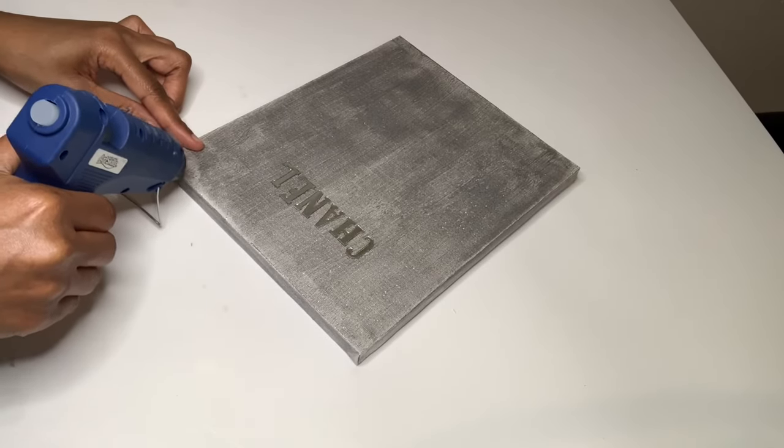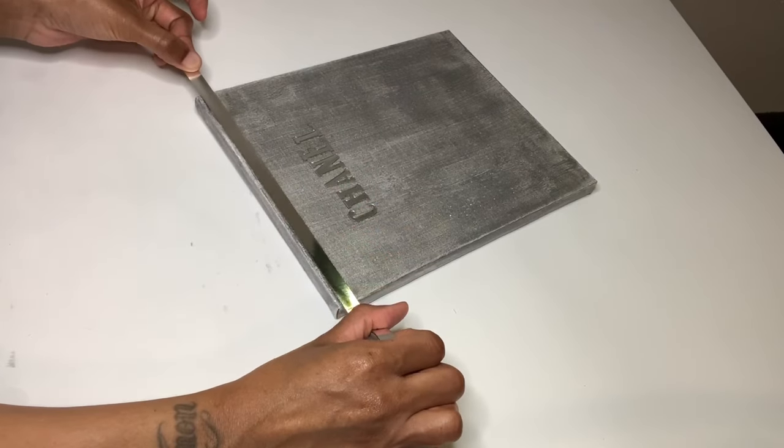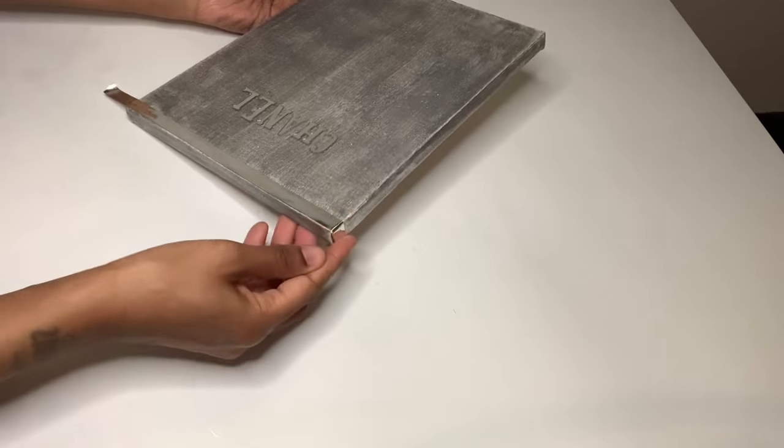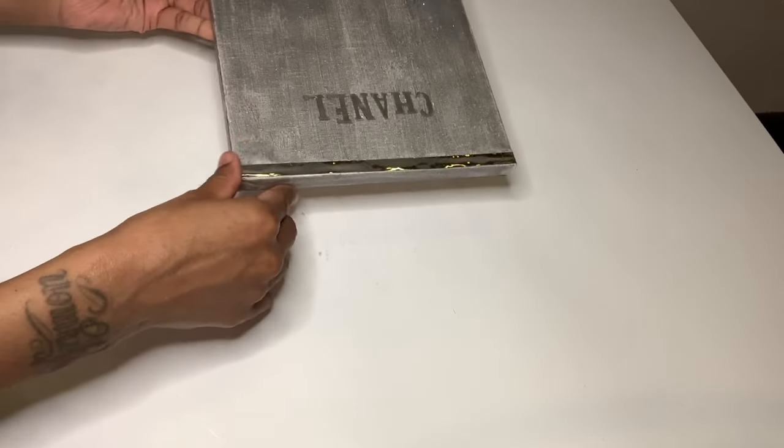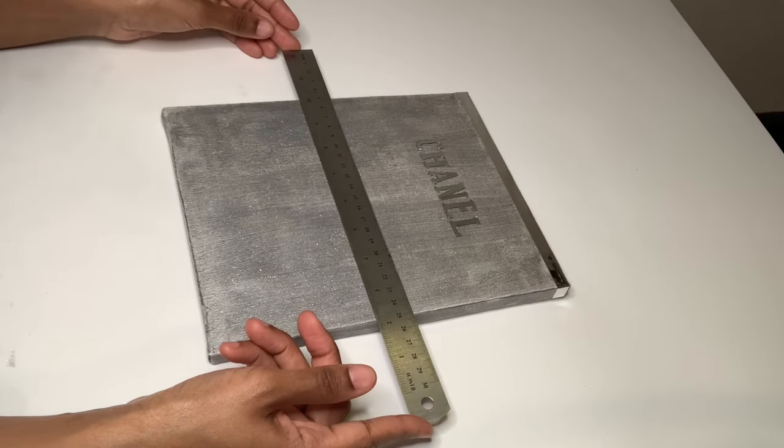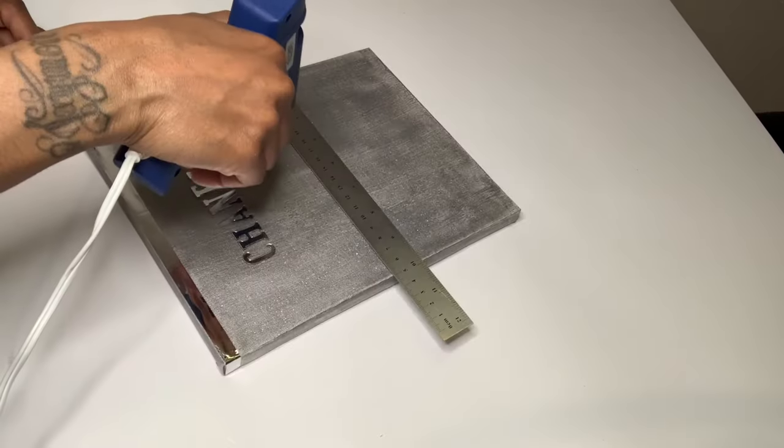I'm using more of that metallic tape and I'm putting a little glue across the top to keep the tape in place. Now I'm gluing another strip of tape in the center of my canvas.